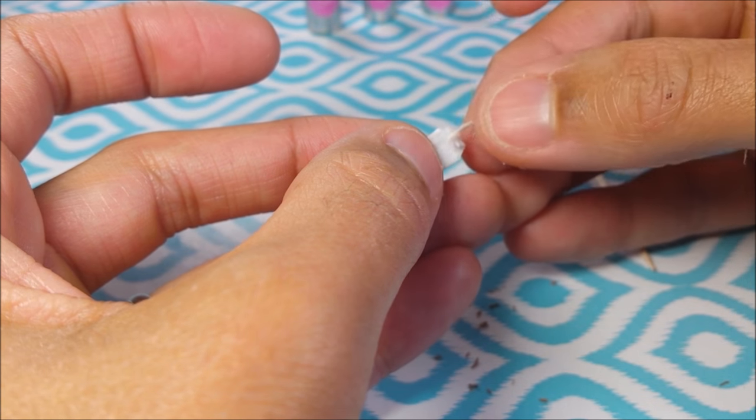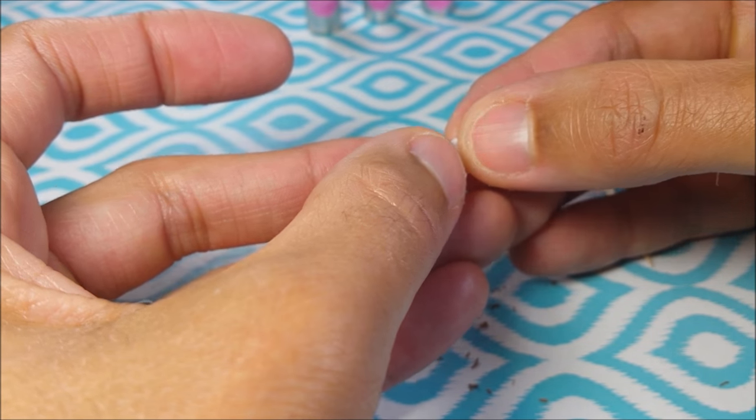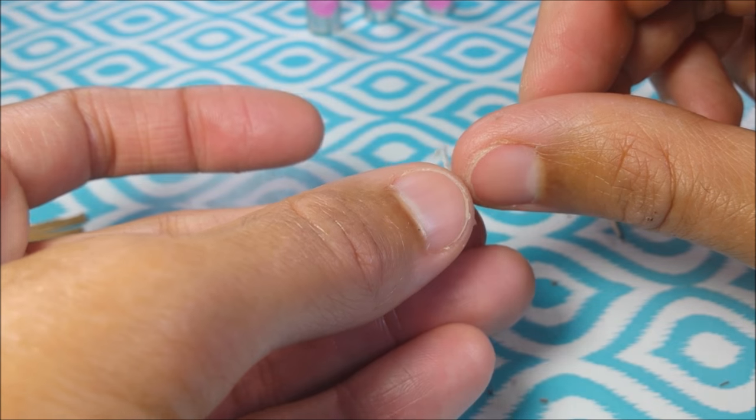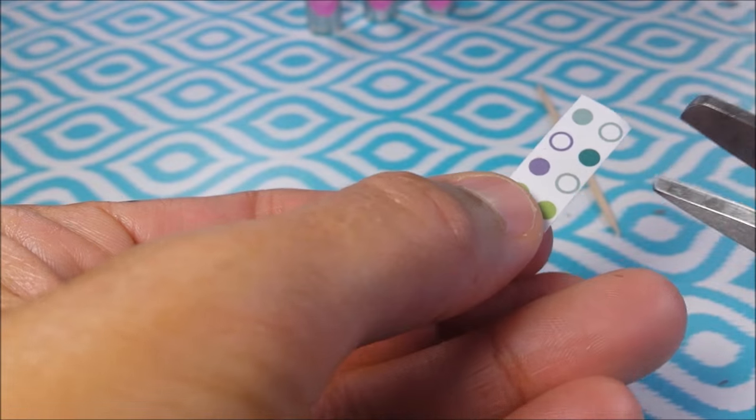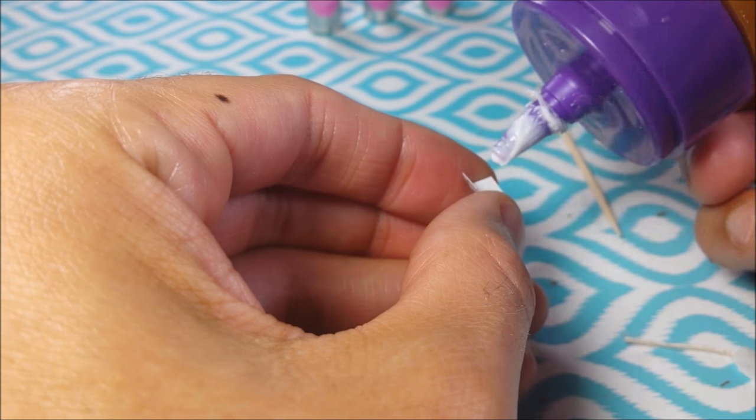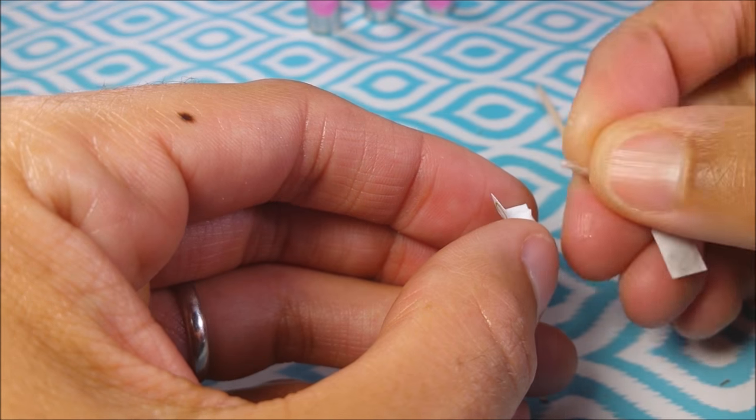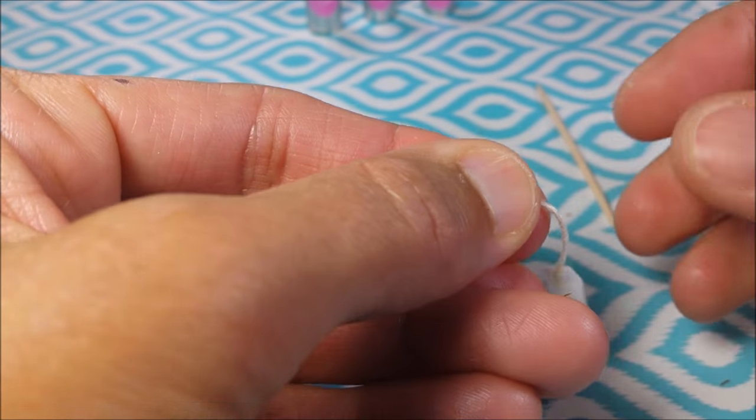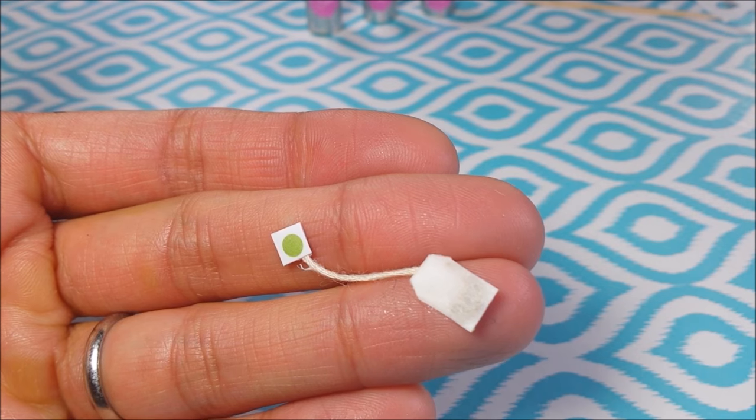Pull your piece of string and fold it in half. And glue to the end of the string for a tiny little teabag.